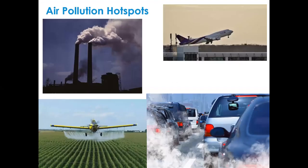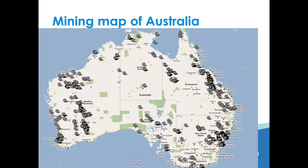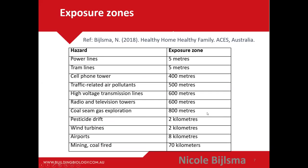Air pollution hot spots include pesticides from crop dusting and golf courses, industrial air pollutants, flight paths — stay more than seven kilometers away — and traffic. If you live in inner-city Melbourne, your lungs will have to deal with carbon monoxide, carbon dioxide, nitrogen dioxide, polyaromatic hydrocarbons, and ultrafine particles. Your body will become the filter if you don't have an air filter. Mining operations throughout Australia also present significant exposure zones.